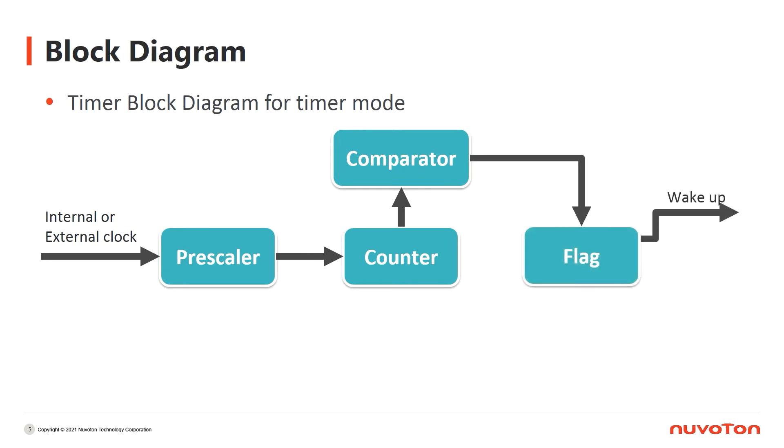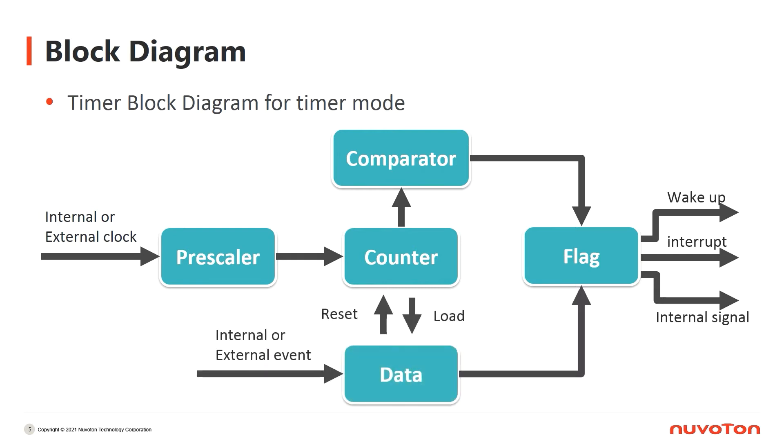Then, the flag will trigger a wake-up, an interrupt, or an internal signal by its register setting. The value of the counter can be reset by an internal or an external event. The value of the counter can also be loaded to a data register for query. The flag can also be set by the events in order to trigger corresponding actions. By this design, you can set different actions by your requirement, either when time is up or when there are events detected.